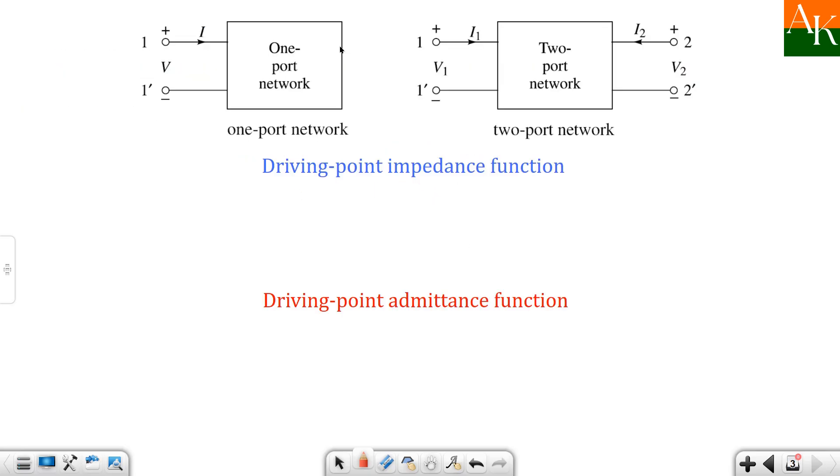Here you have two types of network: one port network and two port network. And last lecture I have told that one port network, two port network, or multiport network - you can define driving point functions.